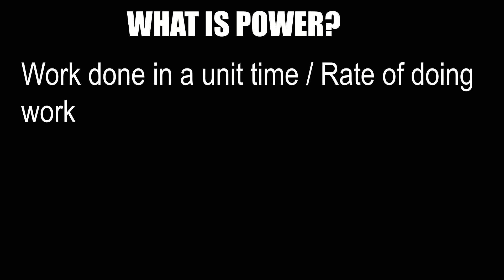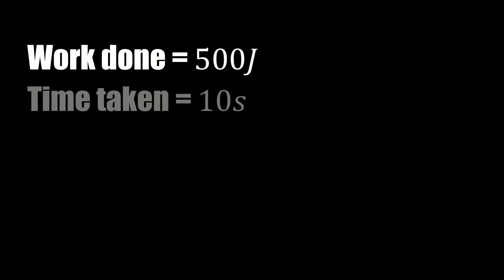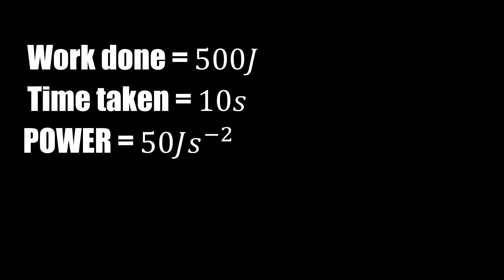Power is simply just work done in a unit time, or rate of doing work. Let me explain. If 500 joules of work is done in 10 seconds, then power is 500 divided by 10, which is 50 joules per second. Now joules per second is 1 watt. We normally keep the answer in watts, so it's 50 watts.